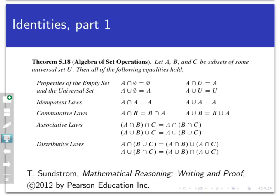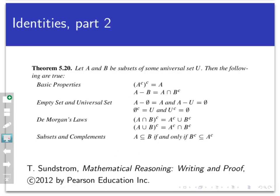Just to point out a couple of these that we'll refer back to in this video: the associative laws tell us that if I have a bunch of intersections or a bunch of unions grouped together, I can regroup them however I want. The distributive laws are like in arithmetic where we distribute multiplication over addition, except we can distribute intersections over unions and unions over intersections. We also had a theorem with a few more identities — for example, this one we proved in the last screencast: A minus B is equal to A intersect B complement.